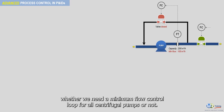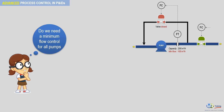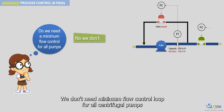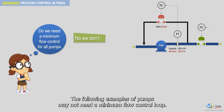The question is whether we need a minimum flow control loop for all centrifugal pumps or not. The answer is no. You will not see this type of control on each centrifugal pump at your facility. We don't need a minimum flow control loop for all centrifugal pumps.